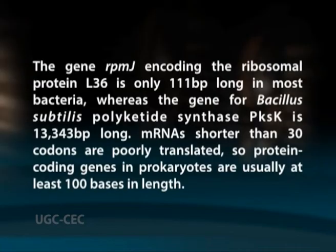There seems to be no strict limits on the length of the genes. Indeed, the gene RPMJ encoding the ribosomal protein L36 is only 111 base pairs long in most bacteria, whereas the gene for Bacillus subtilis polyketide synthase PKSK is 13,343 base pairs long. mRNAs shorter than 30 codons are poorly translated, so protein coding genes in prokaryotes are usually at least 100 bases in length.